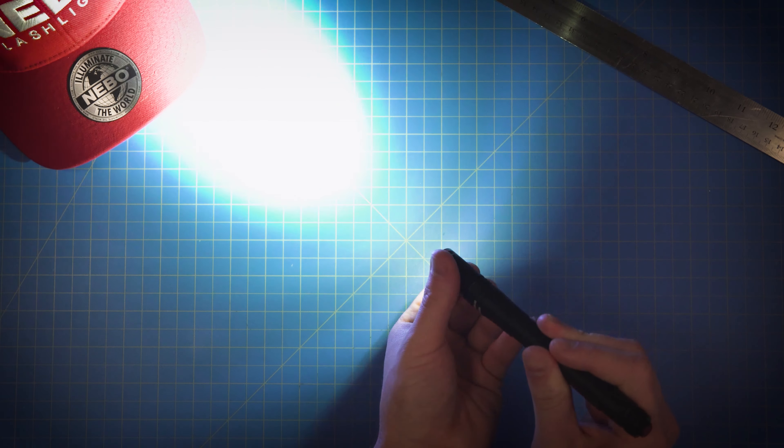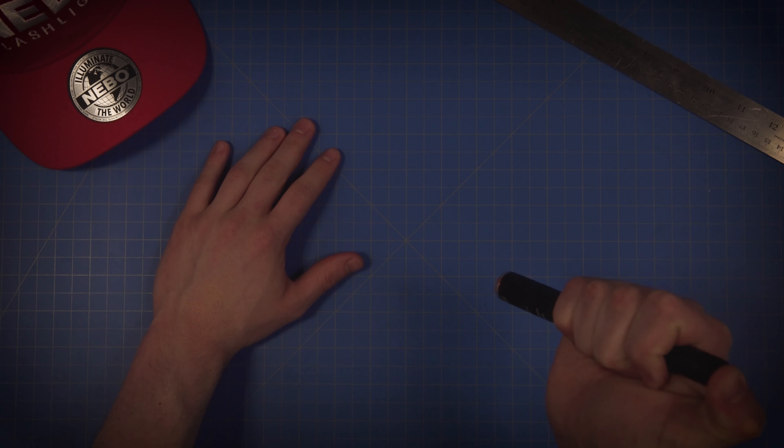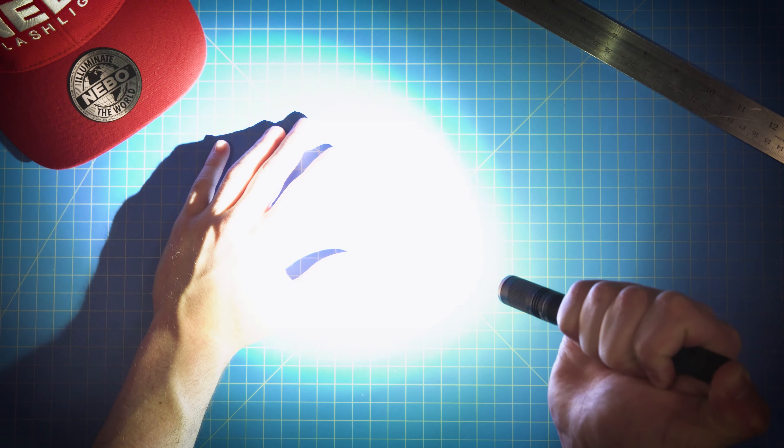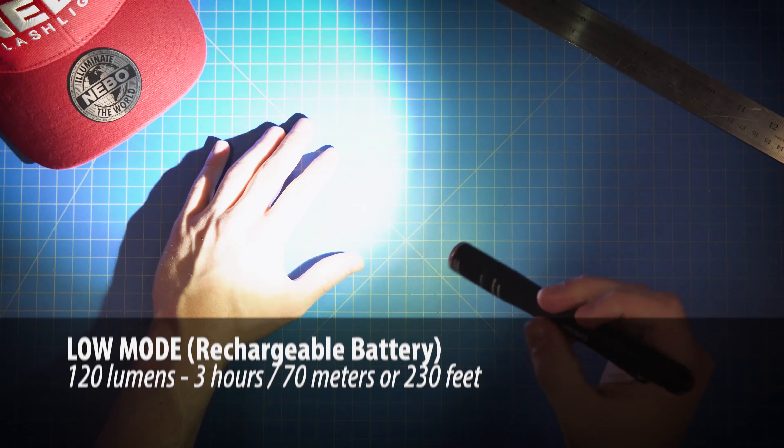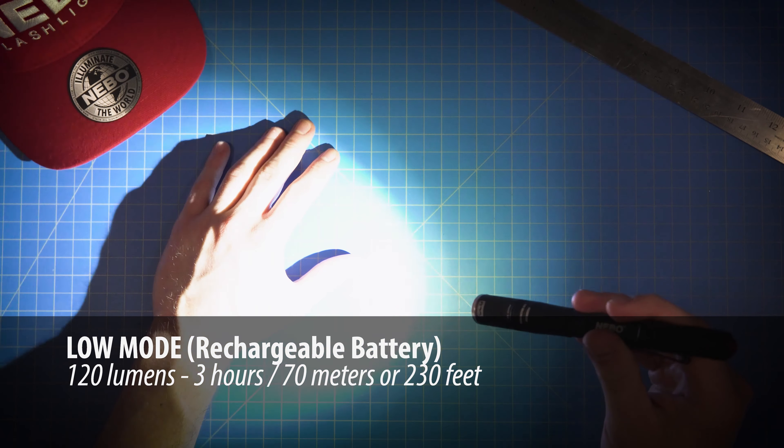Press the button all the way down again to turn the light off. And if you press it again within eight seconds of first turning it on, it will switch to the next mode, low, which is up to 120 lumens, shining at a distance of up to 70 meters, or 230 feet, for three hours.